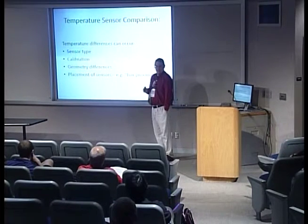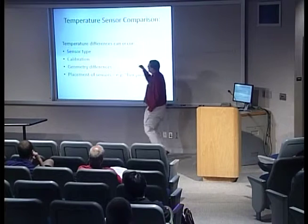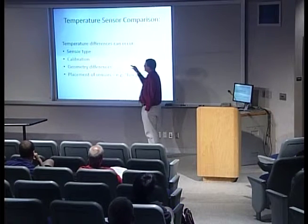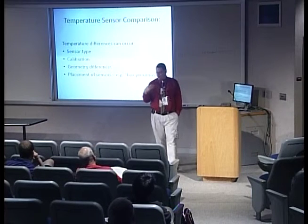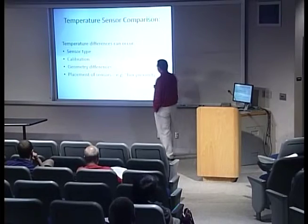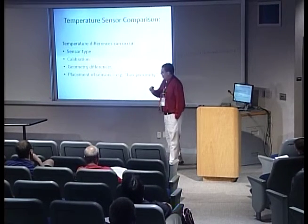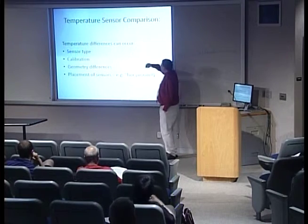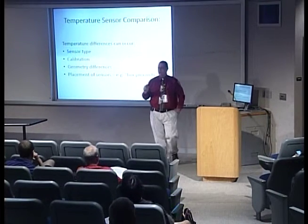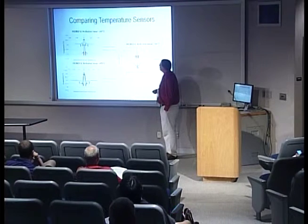We don't want to rely just on HOBO data. We want to expand to using the DS18B20 sensors and change the different types of sensors. We also want to look at more calibration — is this a thermal effect we're actually seeing, or is there some drift occurring? What are the geometry differences? And placement of sensors is a very important consideration.